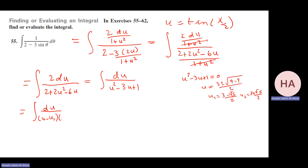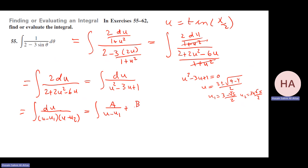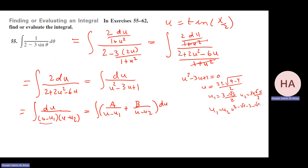The roots of u² - 3u + 1 = 0 are u₁ = (3 - √5)/2 and u₂ = (3 + √5)/2. Partial fractions give A = -1/√5 and B = 1/√5. The integral gives (-1/√5) ln|u - u₁| + (1/√5) ln|u - u₂| + C.